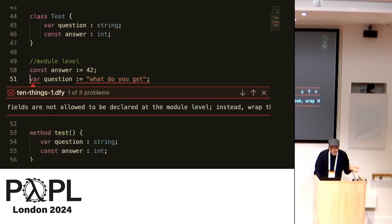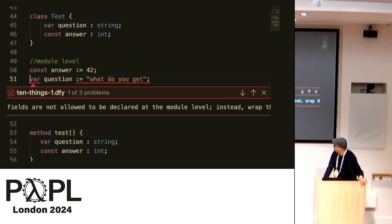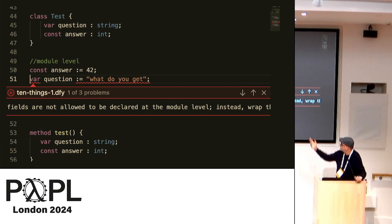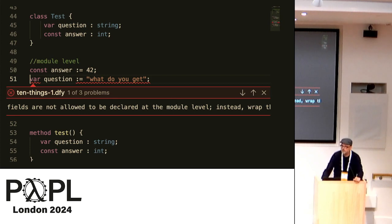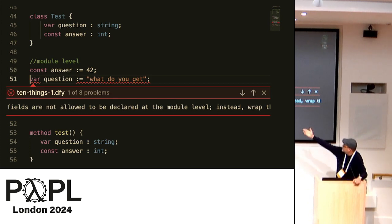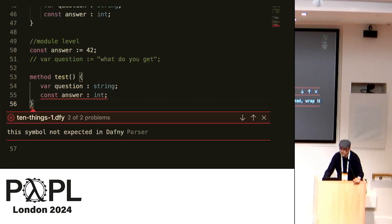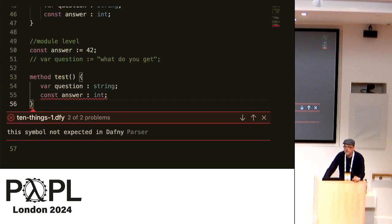There's a bunch of things like that. Lots of languages say you can't have mutable state defined at a module level — so you have constants defined at the module level. But where it comes unstuck is if you try to have those constants inside a method, which you can't do.